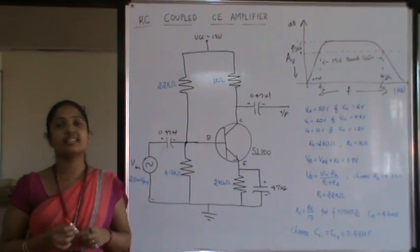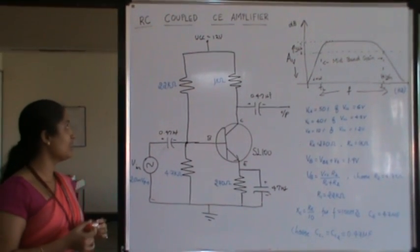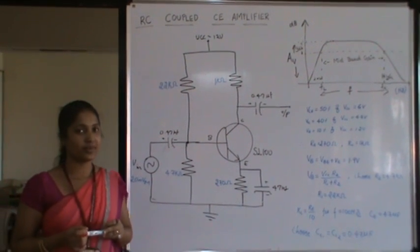The next element is to design and set up an RC coupled common emitter amplifier and to plot the frequency response curve.